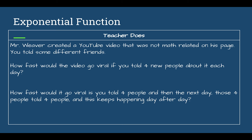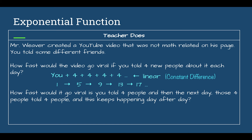Let's look at an example comparing exponential and linear functions. Mr. Weaver created a YouTube video and told some friends about it. How fast would it go viral if he told four new people about it each day? You tell four people — now five total know. Four more: nine total. Then 13, 17, 21, and so on. This is linear — it's adding the same amount every time.